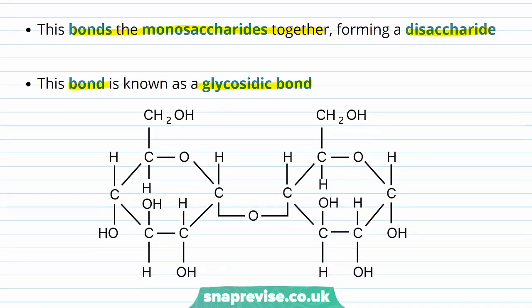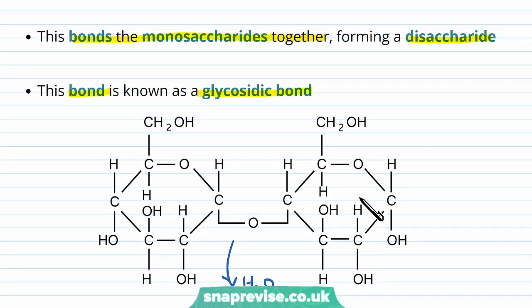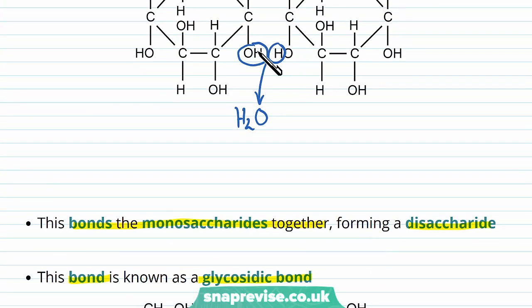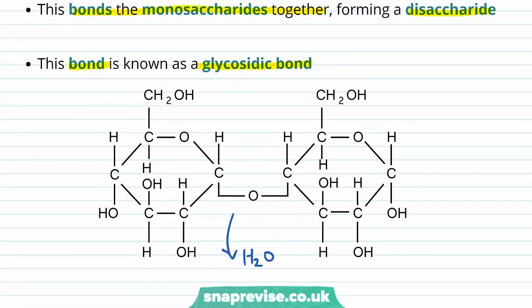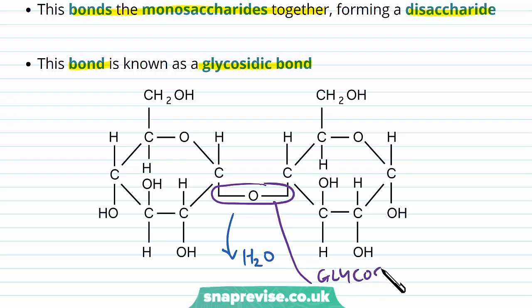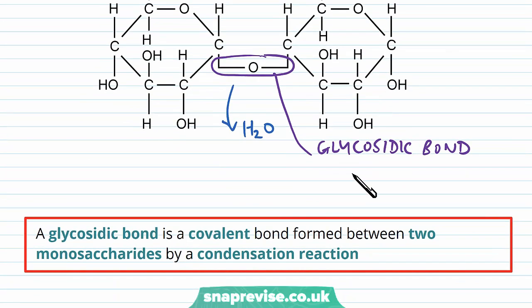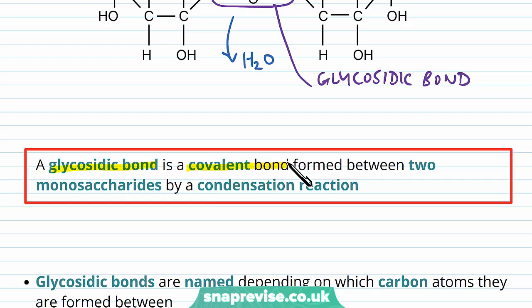After the H₂O is removed and leaves, the oxygen remaining on one of those hydroxyl groups — because we only took the H of one and the full OH group of the other — is left to form that bond. The glycosidic bond is where the two sugars are connected via this oxygen atom, and you can see this oxygen as a kind of bridge between them. A glycosidic bond is a covalent bond, involving sharing of electrons, formed between two monosaccharides by a condensation reaction.